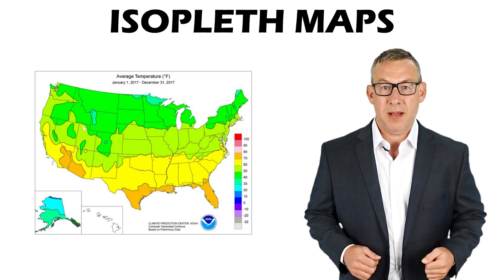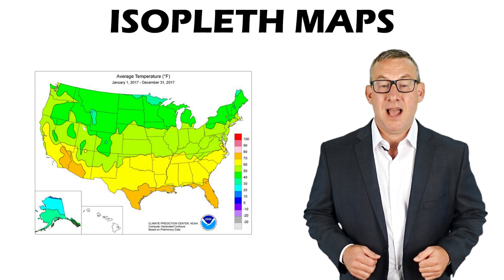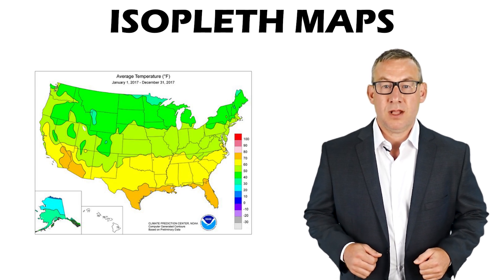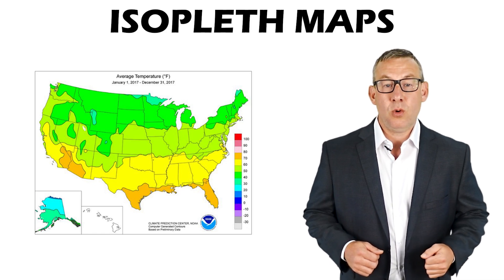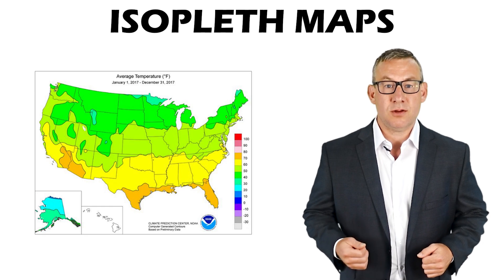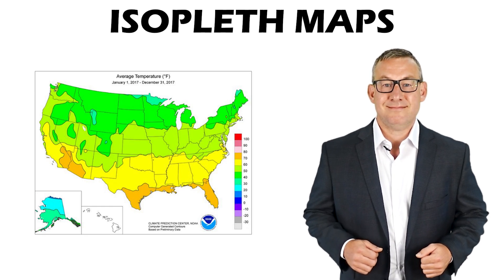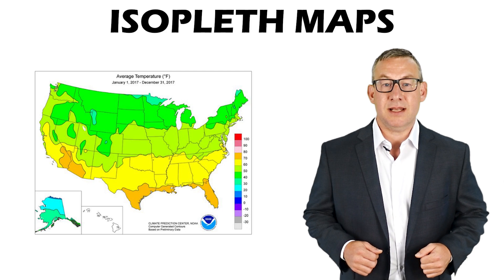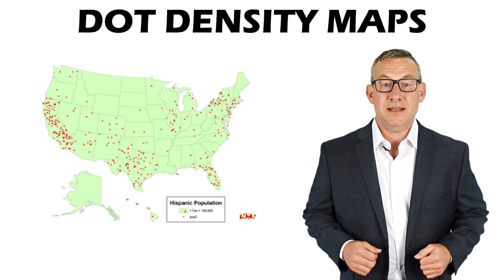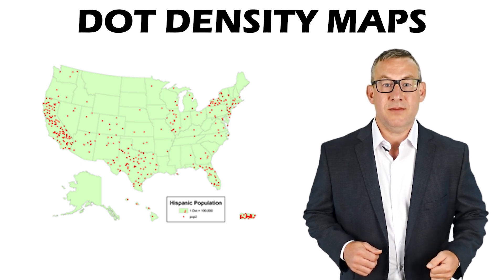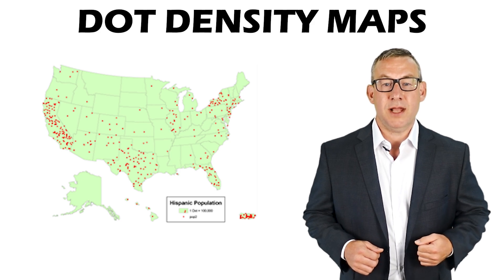Isorhythmic or isopleth maps are maps where lines of equal value, called contour lines, are drawn, or ranges of similar values are filled with similar colors or patterns. They represent a continuous surface. Dot density maps show the distribution of a quantitative phenomenon where values and locations are known.